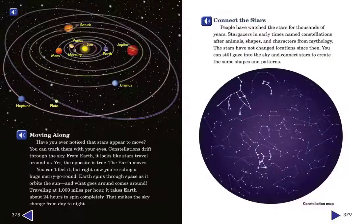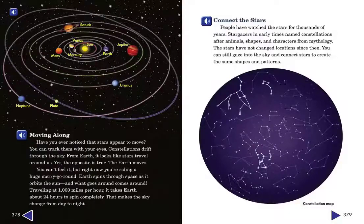Moving along. Have you ever noticed that stars appear to move? You can track them with your eyes. Constellations drift through the sky. From Earth, it looks like stars travel around us. Yet the opposite is true. The Earth moves.